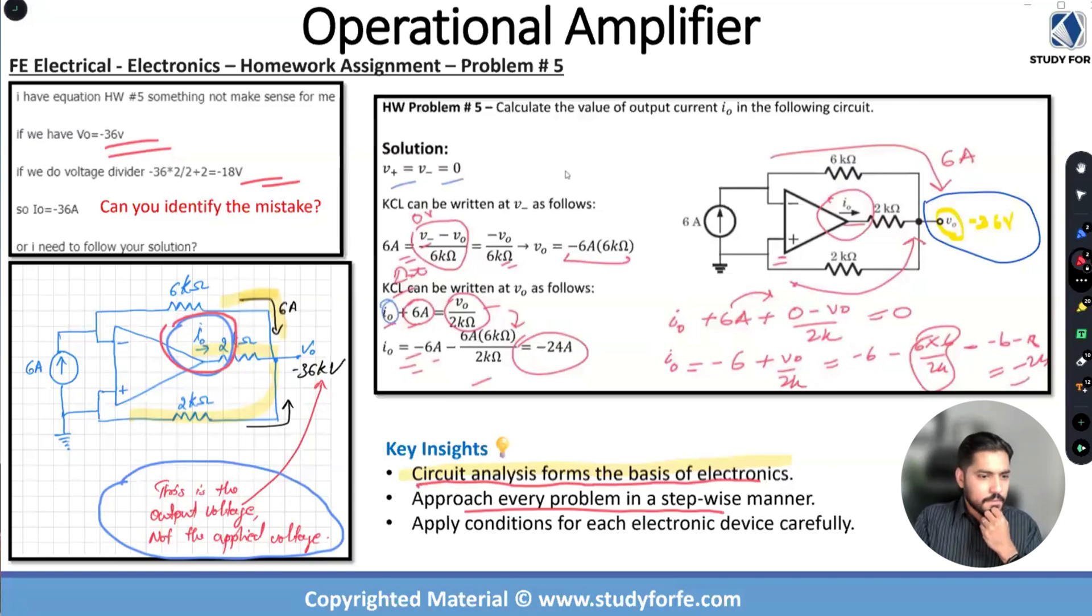And lastly apply conditions for each electronic device carefully. That's the interesting thing about electronics. So the foundation is circuit analysis, on top of that you have device specific conditions in the form of op amps, in the form of diodes. Within diodes you have the PN junction ideal diode, you have the CVD model, and you also have the zener diode. So there are technically three categories of diodes. Then you have the BJTs, you have something else going on for NPN and PNP, and then MOSFETs as well, NMOS and PMOS. So every device has its own characteristics that you need to understand and respect.